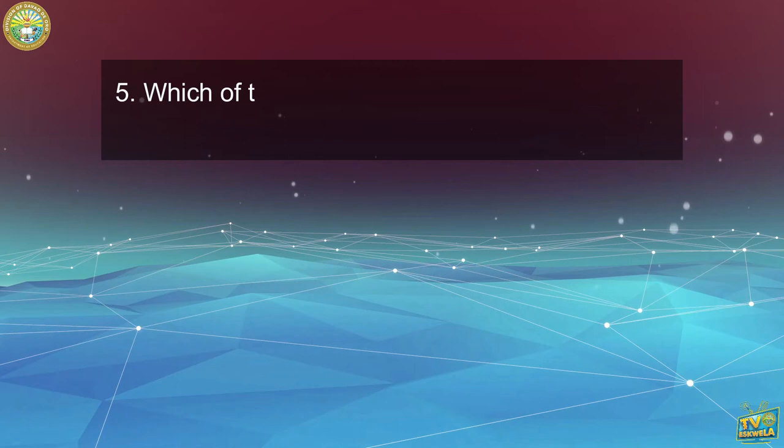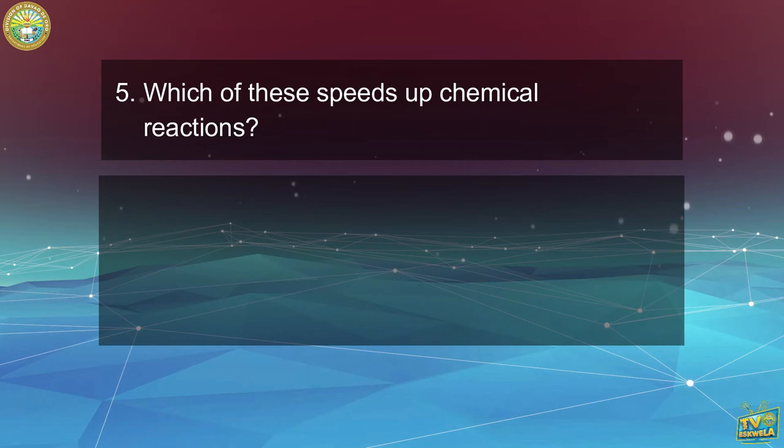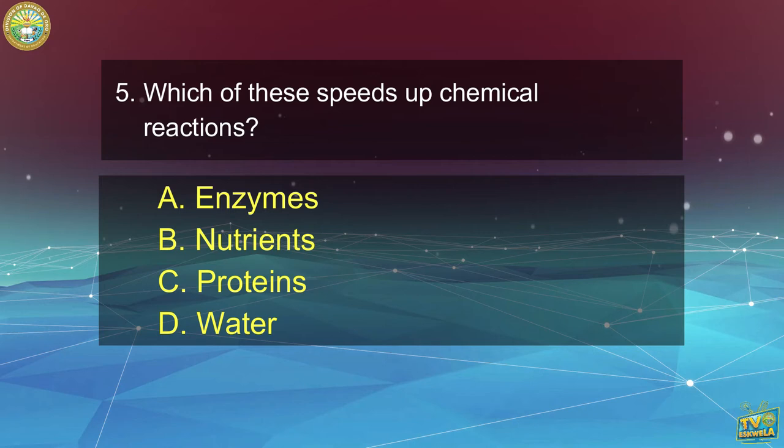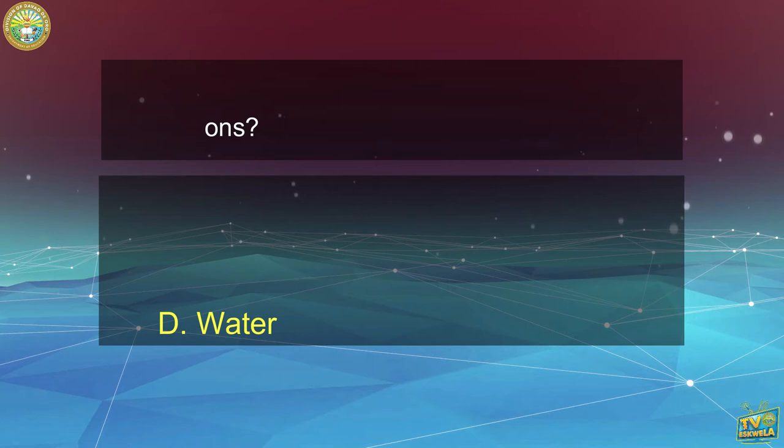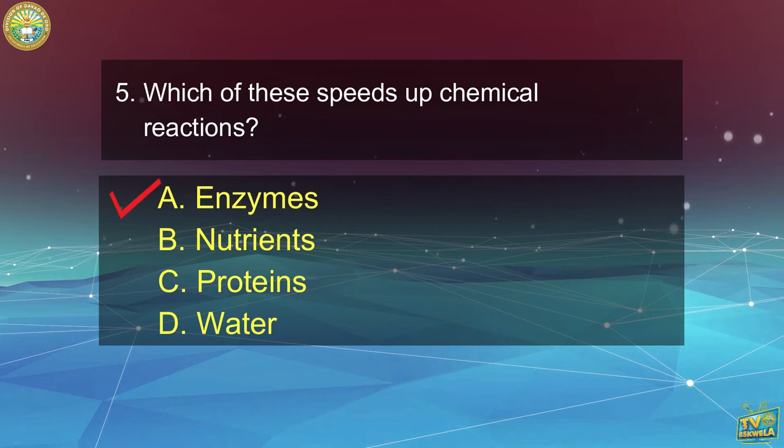Let's proceed to the last question. Number 5: Which of these speeds up chemical reactions? A. Enzymes, B. Nutrients, C. Proteins, D. Water. If you answered letter A, Enzymes — you got the correct answer!